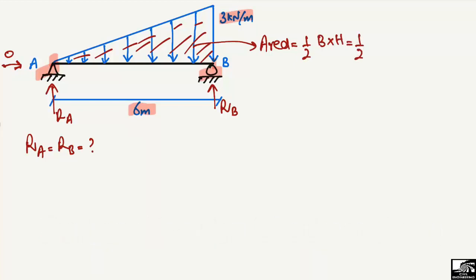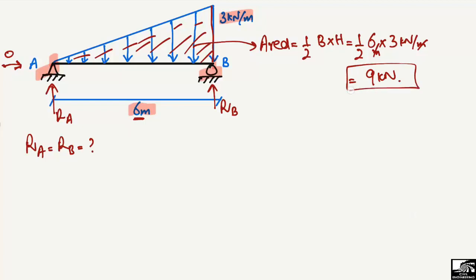To find the area, it is equal to half base times height. The base is 6 meters and the height is 3 kilonewton per meter. So: half times 6 meters times 3 kilonewton per meter — the meter units cancel, giving us 9 kilonewton. So the total equivalent load is 9 kilonewton.